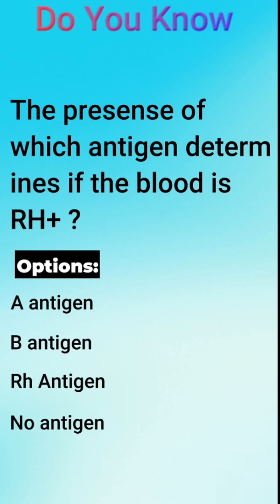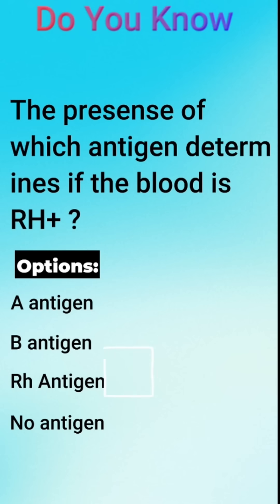The correct answer is C, the Rh antigen. If the Rh antigen, which is also known as the D antigen, is present on red blood cells, that blood type is Rh-positive.